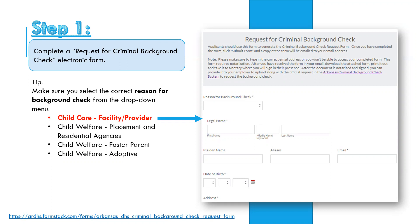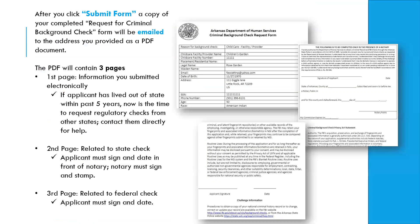If you are completing these for your child care staff, you need to select the child care option. If those staff will work on the child welfare side of your facility, you would select child welfare. Most of you will only be submitting under child care, so please make sure that is the correct selection. If it is not, your applicant will get a not approval due to incorrect information. Complete the applicant's legal name, date of birth, and contact information, and it will email three pages to the address you provide.